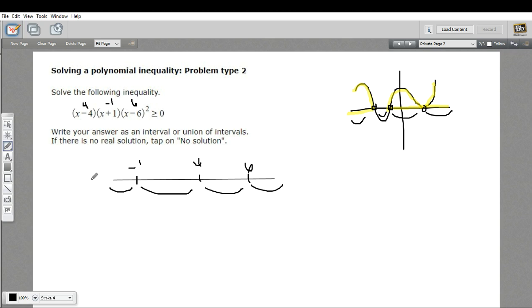This region right here is from negative infinity up to negative 1. So I'm just going to try putting negative 2 in there. If I put negative 2 in for x, that'd be negative 6 times negative 1 times, well, negative 2 minus 6 is 8, but we'd square that, so that'd be positive 64. And I've got two negative signs in these three things that I'm multiplying. Negative times negative is positive. So the function is above the x-axis in this region.